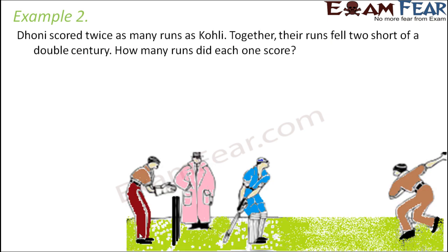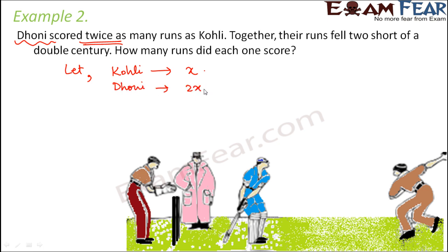Let's look at the next example. Dhoni scored twice as many runs as Kohli. Together their runs fell 2 short of a double century. How many runs did each one score? We do not know the scores of each of them, so let us assume Kohli scored x runs. If Kohli scored x runs, how many runs did Dhoni score? Dhoni scored twice as many runs as Kohli, therefore Dhoni scored 2x.